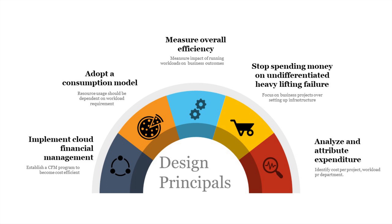Third, measure overall efficiency — measure the impact of business outcomes like revenue and customer gains against the input cost of running your workloads, helping you understand the impact of cost increases on business goals. Fourth, stop spending money on undifferentiated heavy lifting — focus on customers and business projects that achieve organizational goals rather than building IT infrastructure, which cloud can handle. Fifth, analyze and attribute expenditure — by properly tagging your resources, you can identify cost per project, workload, or department, helping establish ROI and create room for optimization.